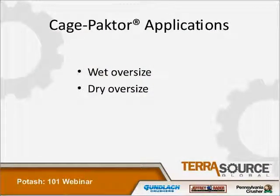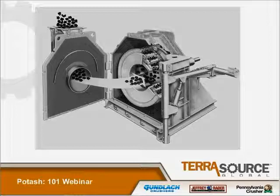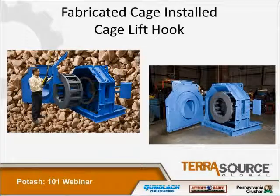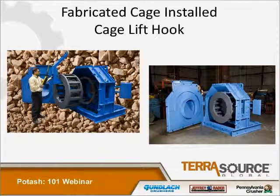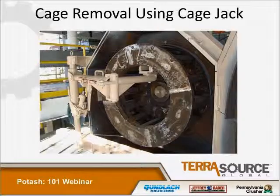Cage factor applications include wet oversize and dry oversize. The cage factor is basically an open-bottom machine — the material enters the center and is sized through three or four rows of impact, so the only variable in the machine is basically the speed. Types of cages can be fabricated with overlay type material, hard surface material, or bolt-on type striking plates. The lifting hook is a tool for getting the cages in and out of the machine, and there's also an option of a cage jack that makes it very easy to remove the cages.